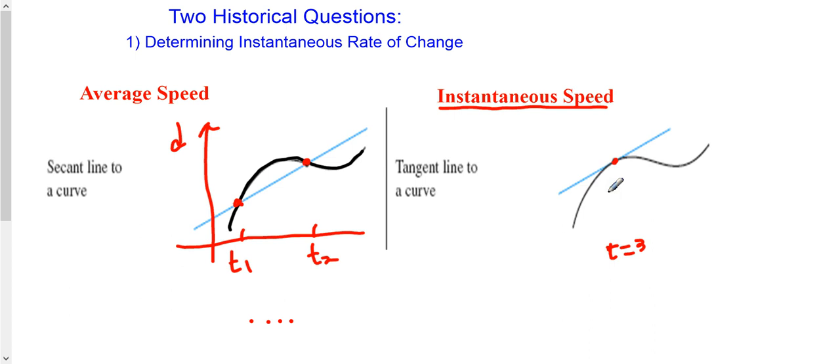And the idea basically turns out to be that you find first the average rate of change, let's say between this time and that time. So you would find the slope of the secant line joining those two points, and then you would let those two points get closer and closer to each other, each time finding this secant line. So what happens is the secant lines eventually approach the tangent line.